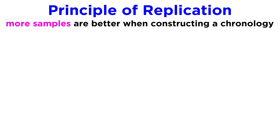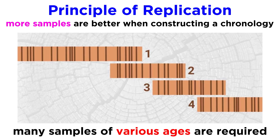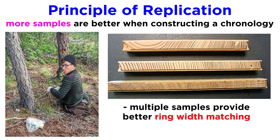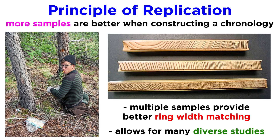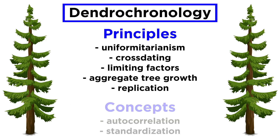The principle of replication really just means that more samples are better. In order to develop a reliable chronology, researchers require many samples going far back in time. Taking multiple samples at a single site allows for better ring width pattern matching and strengthens chronologies, given that patterns in the data can be replicated from one tree to another. This principle can allow researchers to study more than just the lifespan of an individual tree. So that wraps up the five principles.